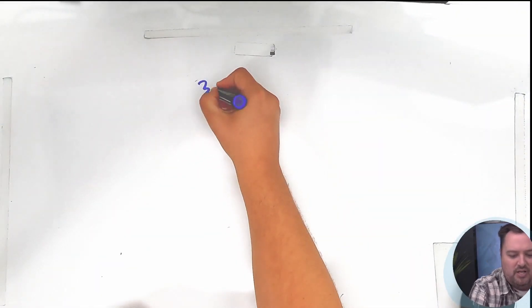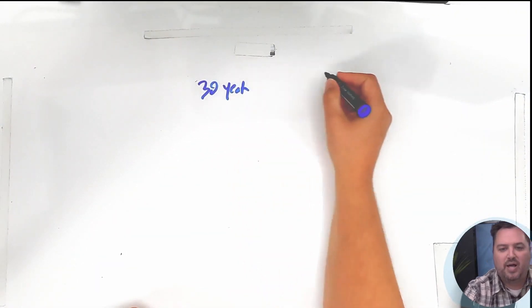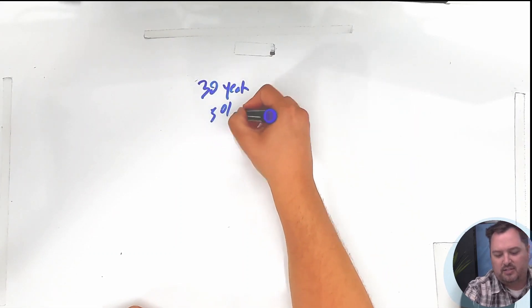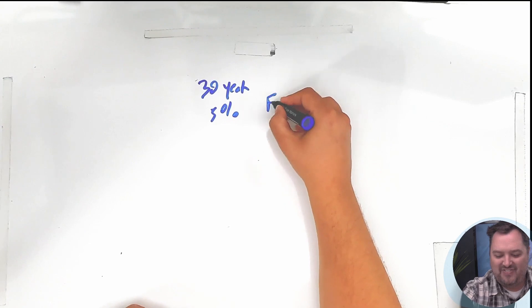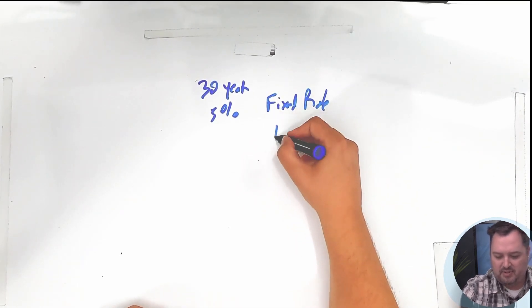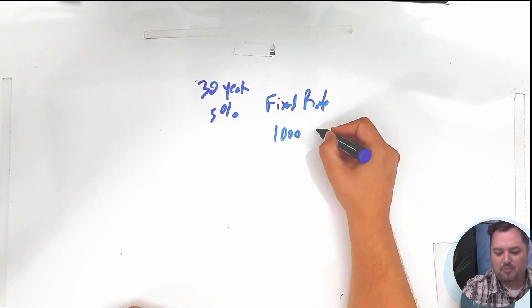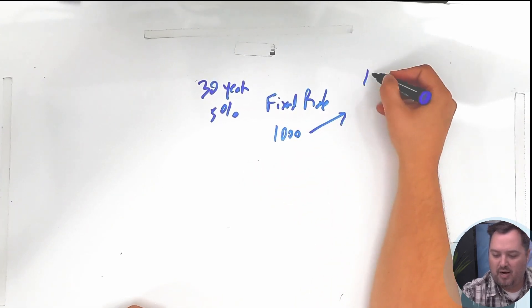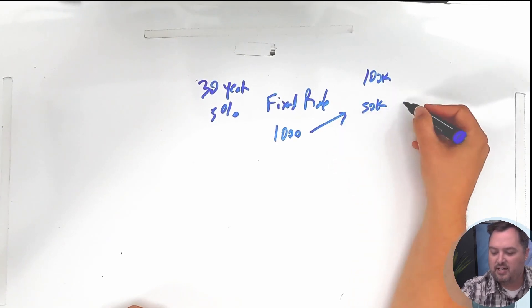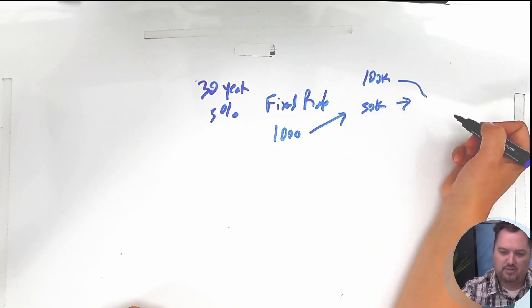Typically when you've got a loan, you're getting a 30-year loan. Let's say the rate's 5%, a fixed rate. That means each time you make a payment—let's say the payment's $1,000—if you owe $100,000, a certain portion, like $50, is going to go towards paying down that $100,000.